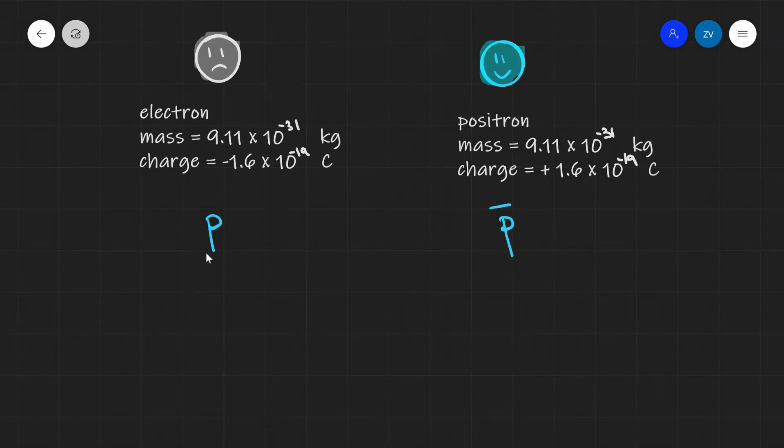So this particle here, the proton, obviously has a charge of plus 1.6 times 10 to the power of minus 19, whereas the antiproton will be a negative particle with a charge of minus 1.6 times 10 to the power of minus 19, with exactly the same mass.